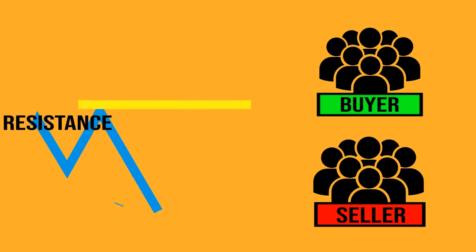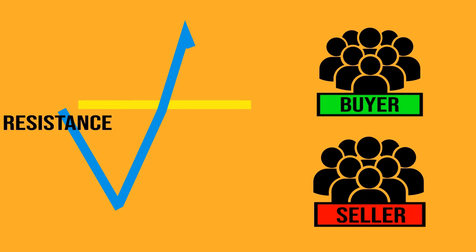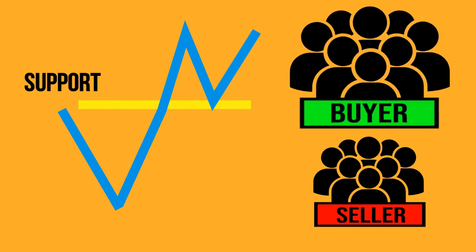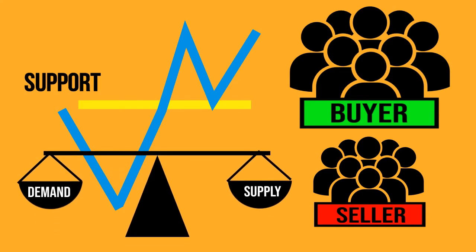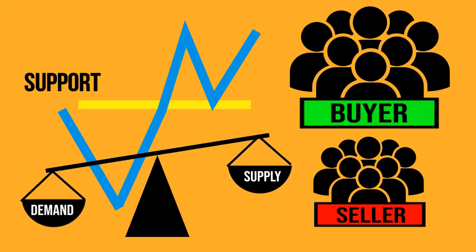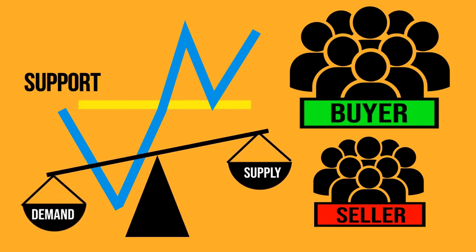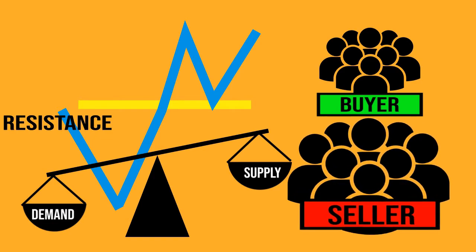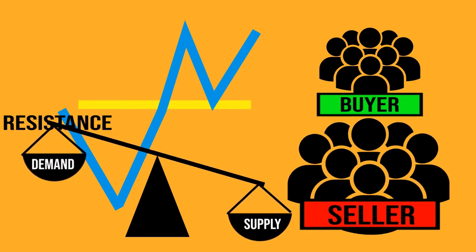When the price level breaks out the resistance level, immediately the resistance becomes the support level. This is because the market has more buyers and pushes up the price level, which will simply go higher. Since the buyers are increasing, traders expect the market will have support at the resistance due to more demand than supply. This happens the same when the price level breaks out the support level — the support level becomes the resistance level, as sellers are now more than buyers and supply is more than demand.